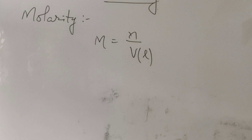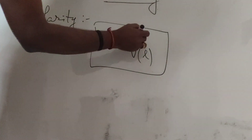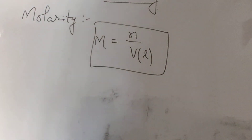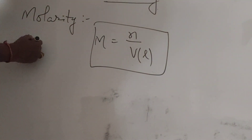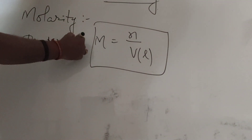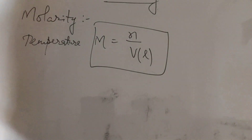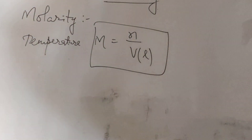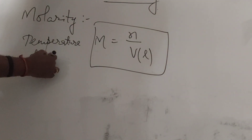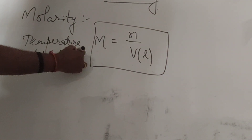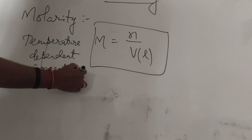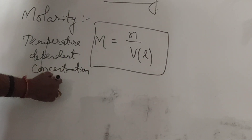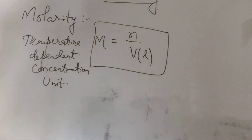Molarity is given by number of moles of solute divided by volume in liters, so molarity M equals N by V, where N is the number of moles and V is volume in liters of solution. Molarity is temperature dependent because volume changes with temperature, so it is not a very good unit to express concentration.